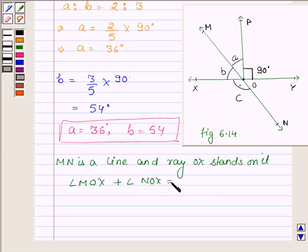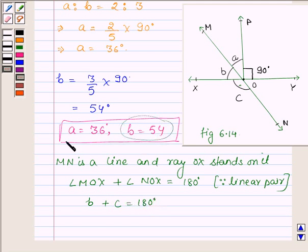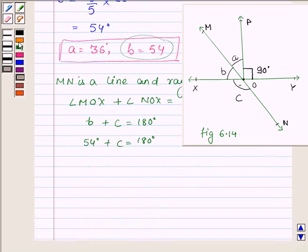Now angle MOX is b, which is 54 degrees. So 54 plus c is equal to 180 degrees. This implies c is equal to 180 degrees minus 54, which is equal to 126 degrees. Thus c is equal to 126 degrees.